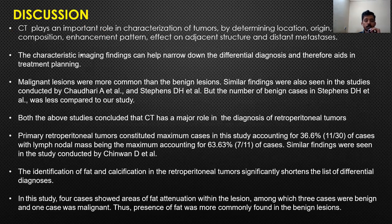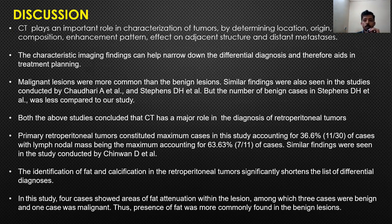Let's come to the discussion. CT plays an important role in characterizing the tumour, helping to narrow down the differential diagnosis and therefore aiding treatment planning. Malignant lesions were more common than benign lesions. Similar findings were also seen in studies conducted by Chaudhary et al. and Stephen D.H. et al., though the number of benign cases in Stephen D.H. et al. was less compared to my study. Both studies concluded that CT plays an important role in diagnosing retroperitoneal tumours.